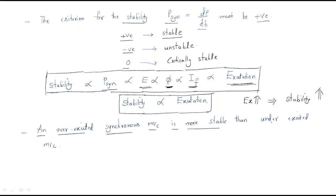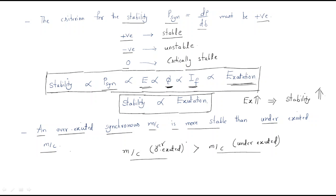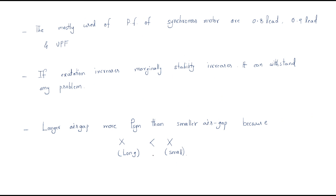An over-excited synchronous machine is more stable than an under-excited machine. Over-excited means the given field current is more than the required field current. Under-excited means the field current is less than required. The stability is always higher for the over-excited machine.